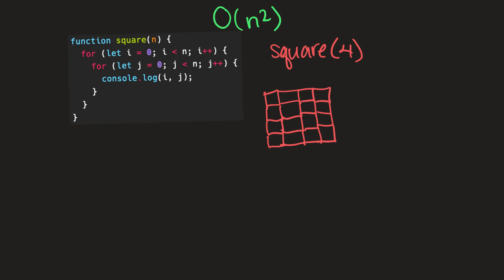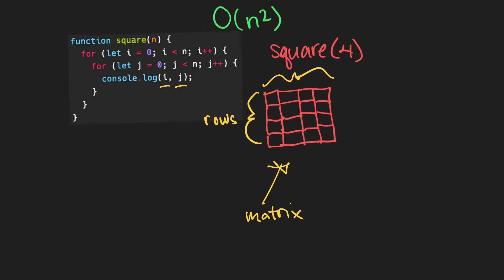What we're left with is this matrix. The reason I said these are coordinates for cells within a matrix is because this here is a matrix — these are rows and these are columns. We can look at i as being our column and j as being our row.